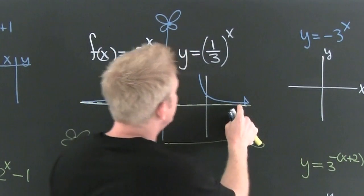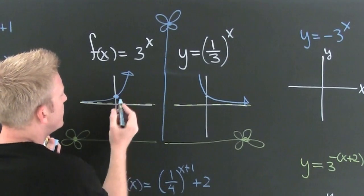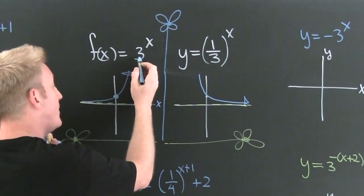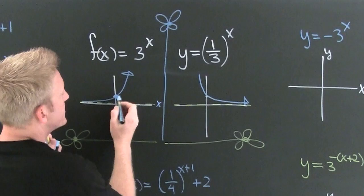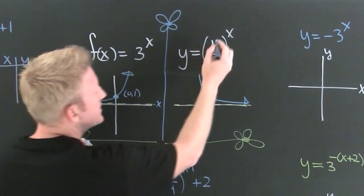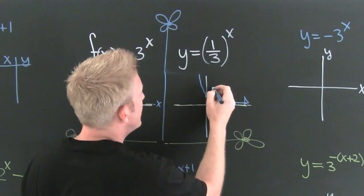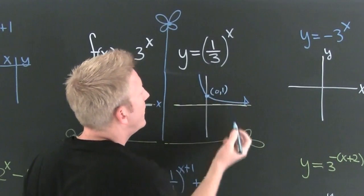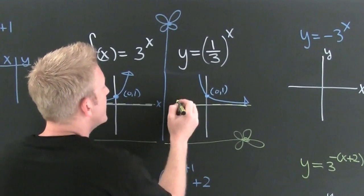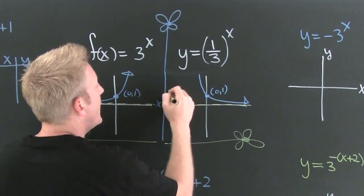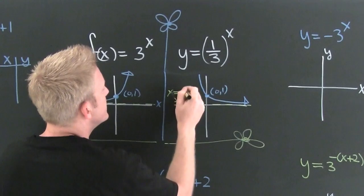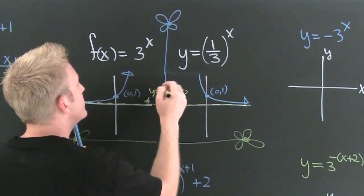There are a couple of things to notice about these graphs. We have special points: when X is equal to zero, anything to the zero power is one, so both graphs pass through the point (0, 1). These graphs also have horizontal asymptotes — in both cases the asymptote is Y equals zero.